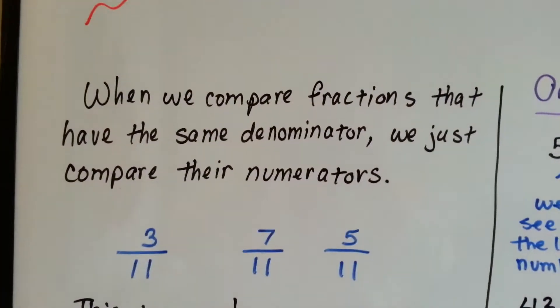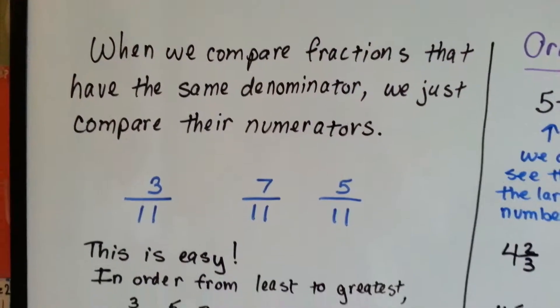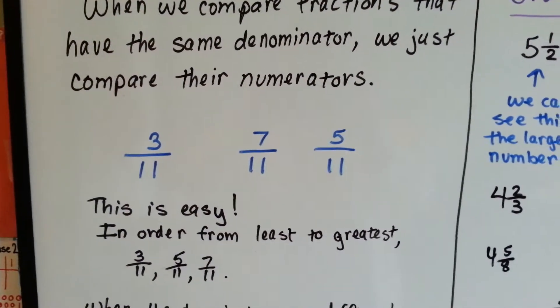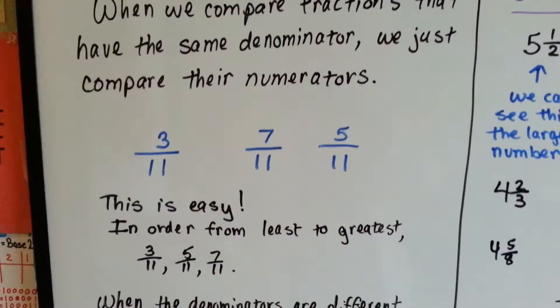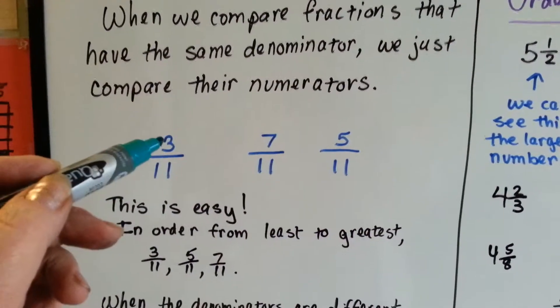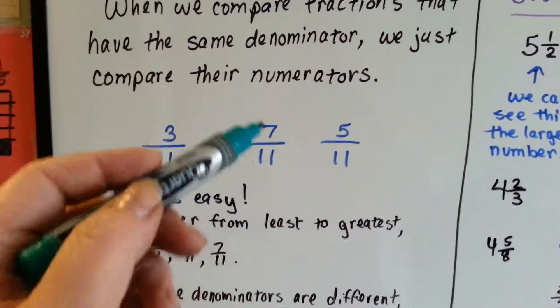When we compare fractions that have the same denominator, we just compare their numerators. That's easy. This is a piece of cake. 3, 7, and 5. The denominators are the same, so we can see 3 is the littlest, 5 is the middle one, and 7 is the biggest.